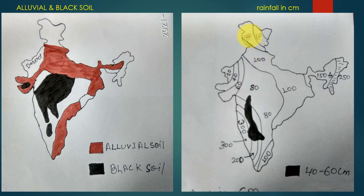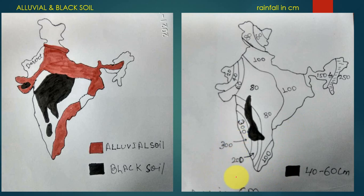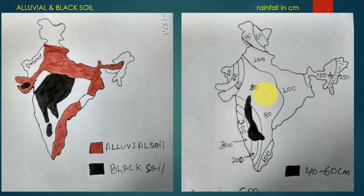Comparing the soil map with the rainfall map, alluvial soil areas receive around 100 cm of rainfall, while black soil areas receive around 17 cm in some zones. Comparing soil with rainfall patterns gives a good understanding of geography, as geography is all about comparing and contrasting different places.